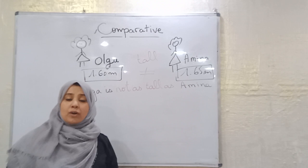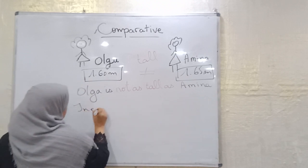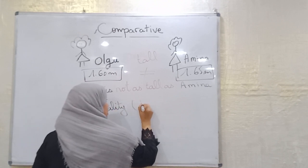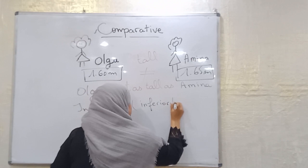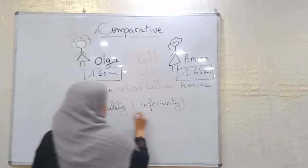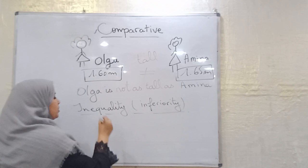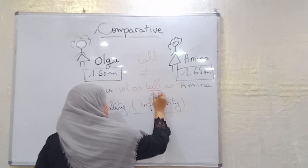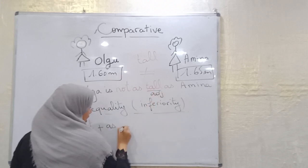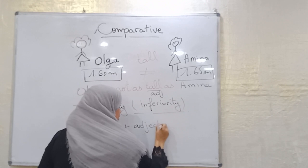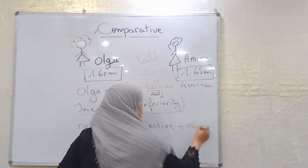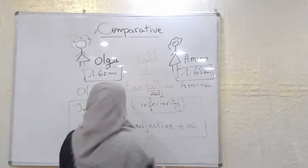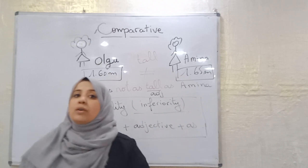To express or to form inequality in English, we can say inequality or inferiority here. So here, to express or to form inequality, we put not plus as, we have said this is an adjective, plus the adjective plus as. This is for the second part for how we express or to form inequality.